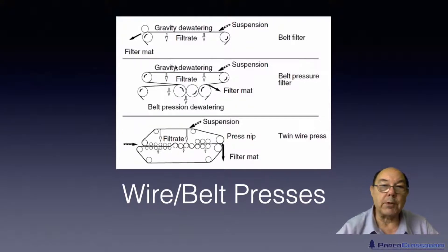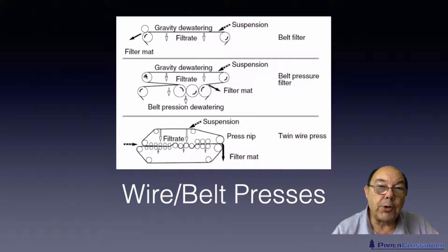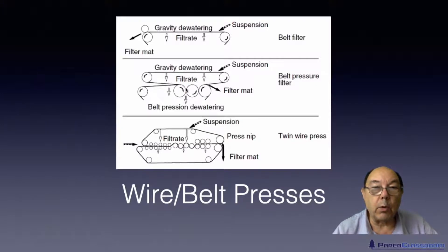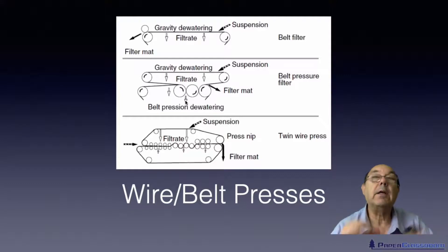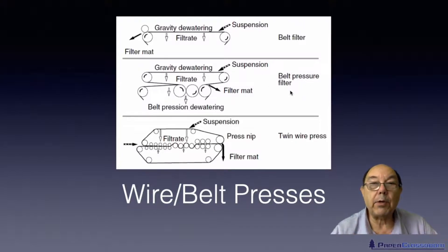To try and improve matters they came up with a new device. Again you put the suspension on, it travels along the top wire, filtrate drops through which you can collect and reuse, and then it carries on along. Here you've got two rolls pressing, and a wire coming in, so it's pressed between two wires to get more dewatering. This one was a belt filter and this is a belt pressure filter.